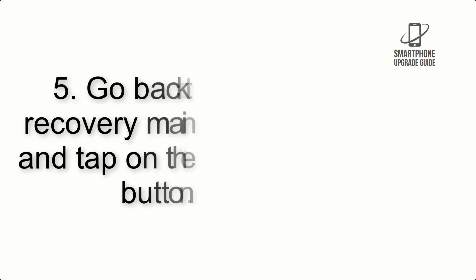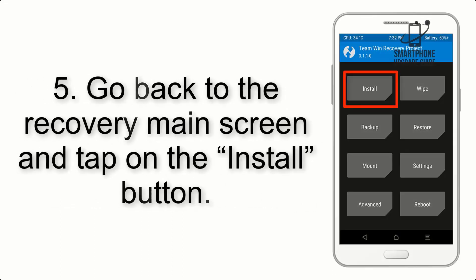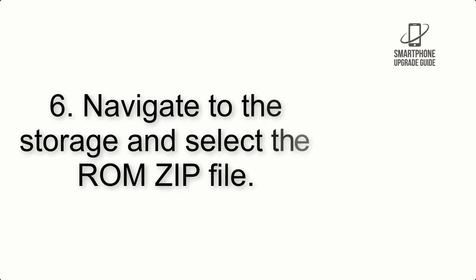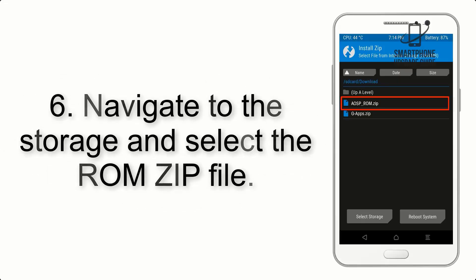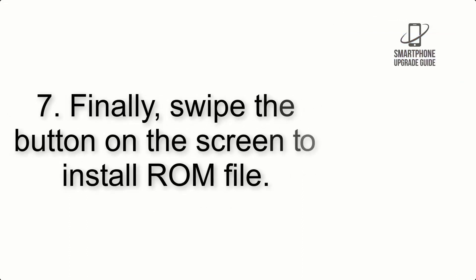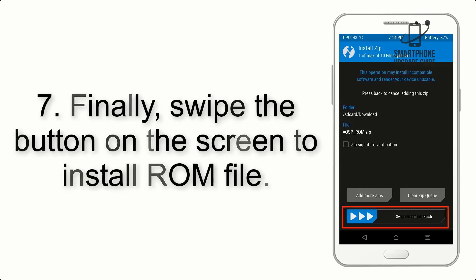Step 4: Swipe the button to wipe the device. Step 5: Go back to the recovery main screen and tap on the Install button. Step 6: Navigate to the storage and select the ROM zip file. Step 7: Finally, swipe the button on the screen to install the ROM.